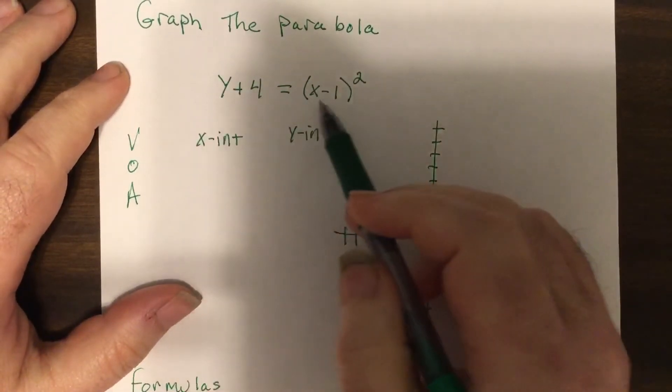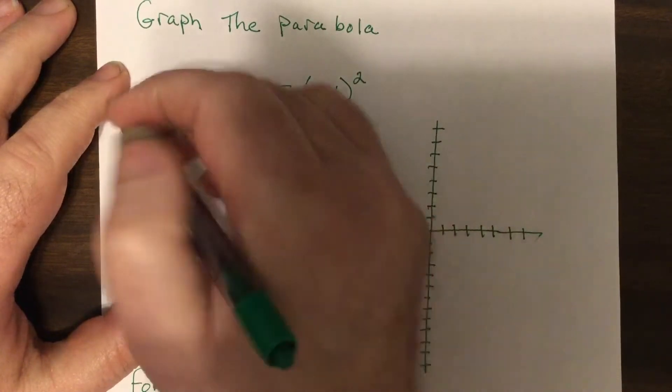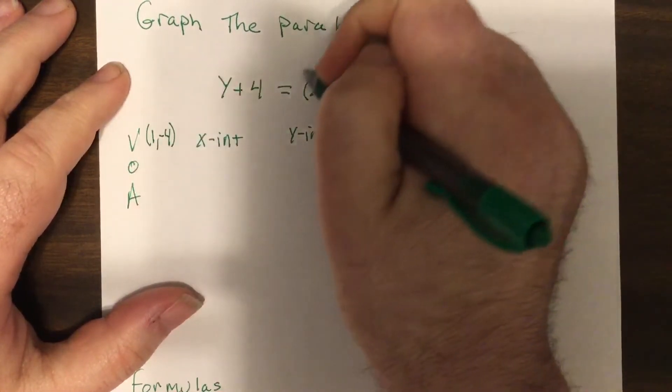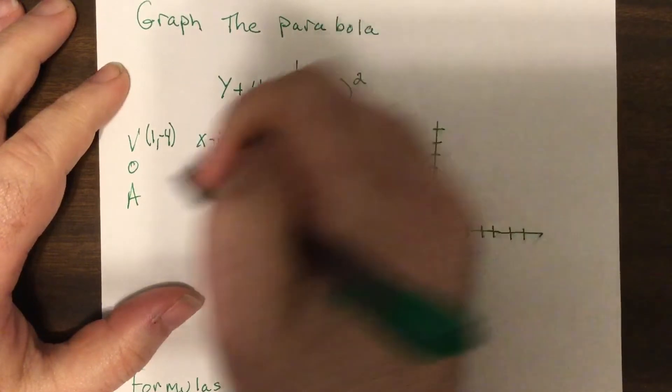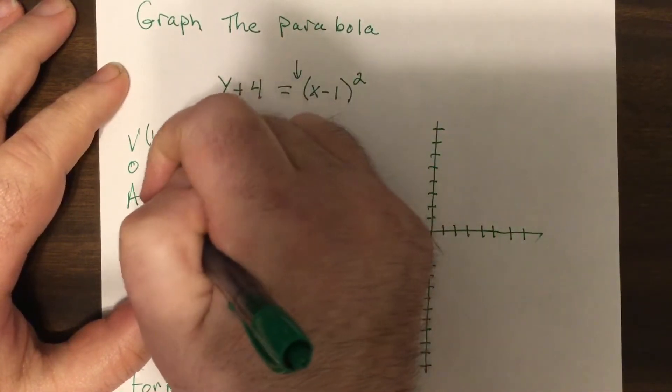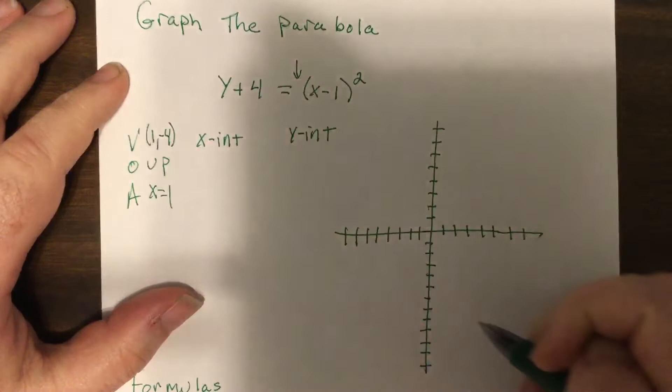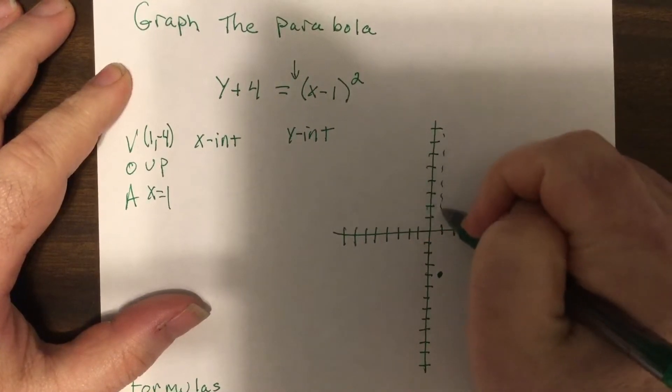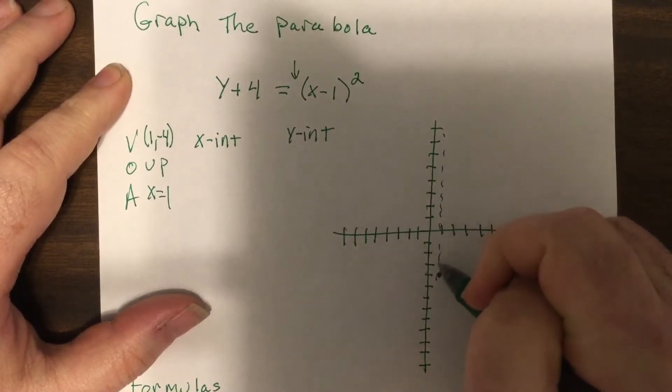Okay my peeps, so the vertex is the opposite number with this, opposite number with this, so it's one negative four. This is positive, it's not shown, so it's soon to be up. And x equals one is our axis. Now I'm going to plot this one negative four and our axis of symmetry, here we go.